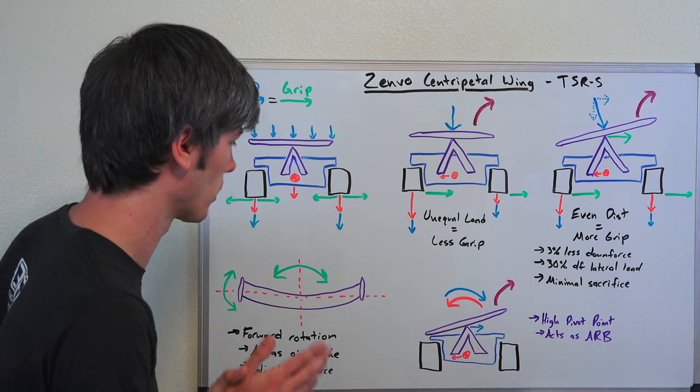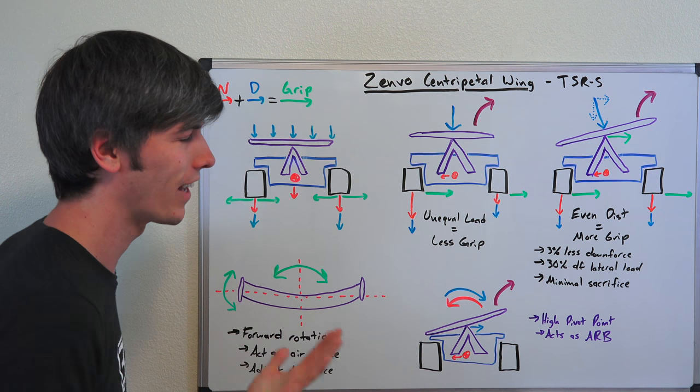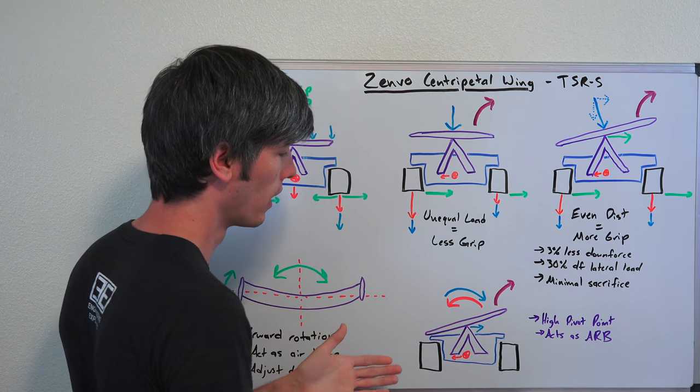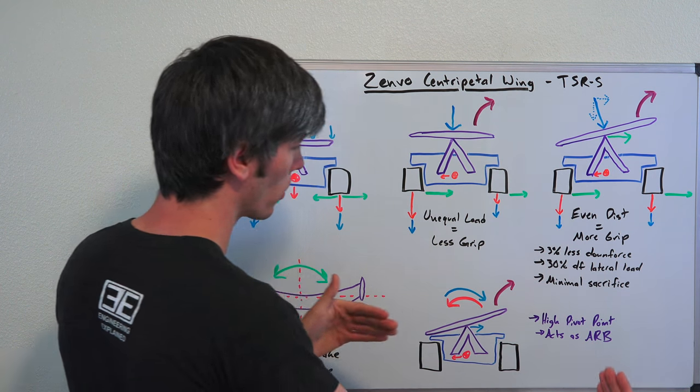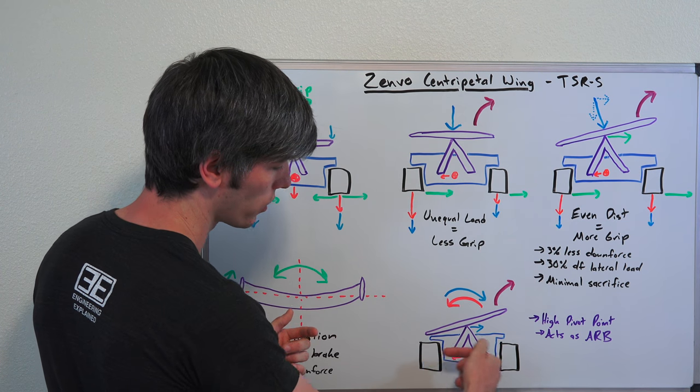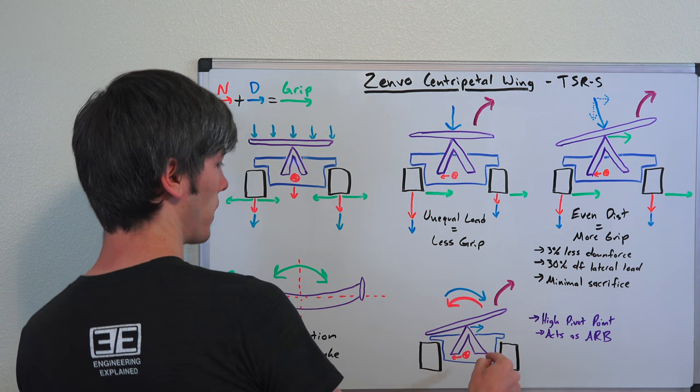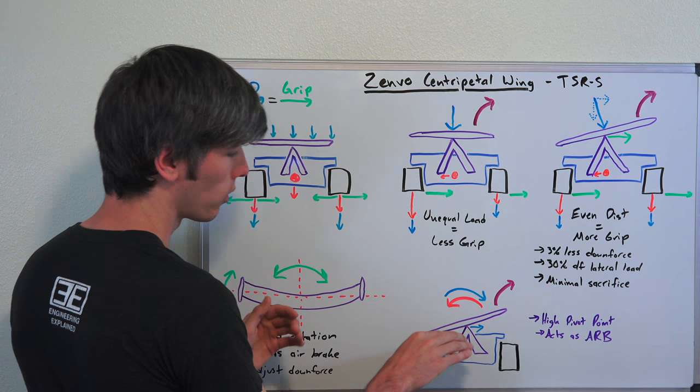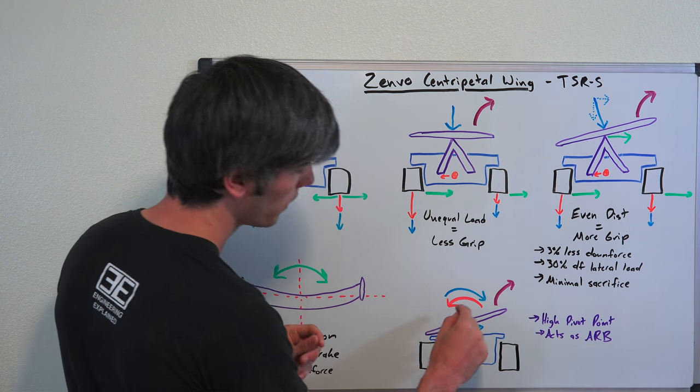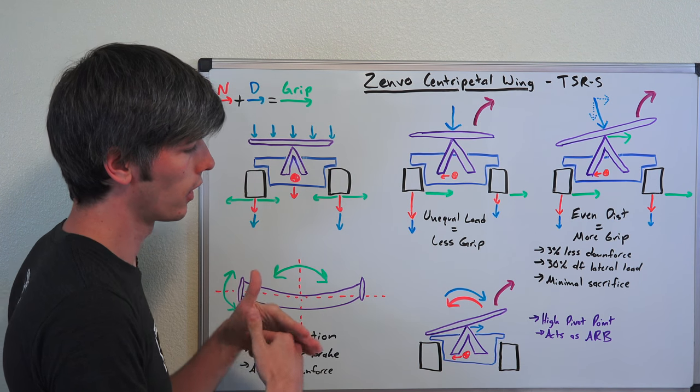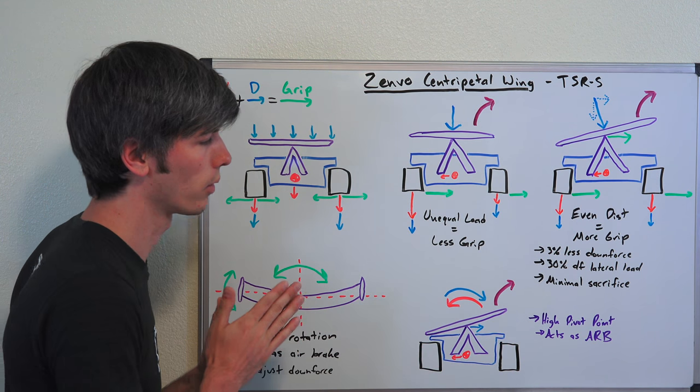It also acts as an anti-roll bar, so this is pretty cool. Because of this high pivot point, let's say you're going around that right hand corner, the car of course wants to lean, and so you've got the center of gravity, which is saying let's tilt the car this way, but then you've got that wing with this high pivot point way up from the ground, which is saying, nope, let's tilt the car the other way. And so that can help counter that and act as an anti-roll bar, to help keep the car flat as it's going around the corner.